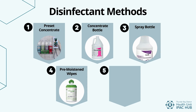The fourth method is pre-moistened wipes — many of you will be most familiar with these. These wipes can be one-step or two-step: two-step wipes need additional cleaning of surfaces before being used to disinfect, while one-step wipes do not. Always read the label to determine which one it is. Regardless of whether the wipes are one-step or two-step, they are not recommended for grossly soiled surfaces or very large surface areas. The fifth method is a pour-top bottle — a ready-to-use disinfectant product applied to a cloth and used on a surface. Next we will go into more detail for the two most common methods: spray and wipes.